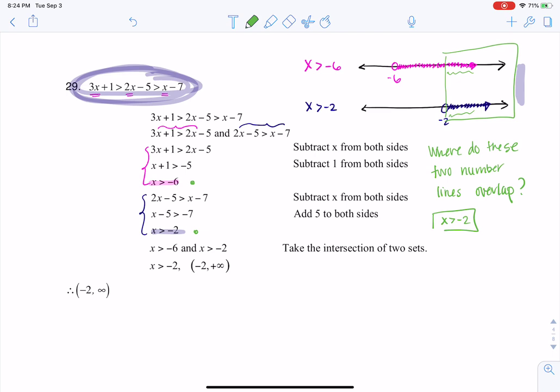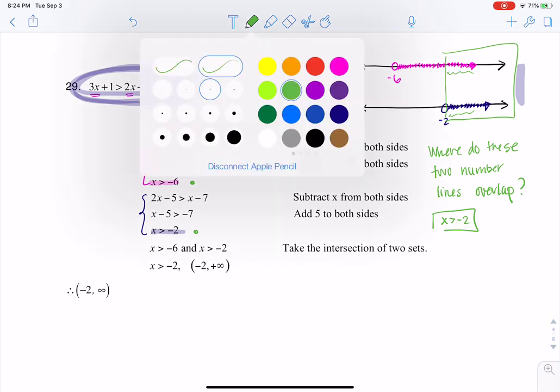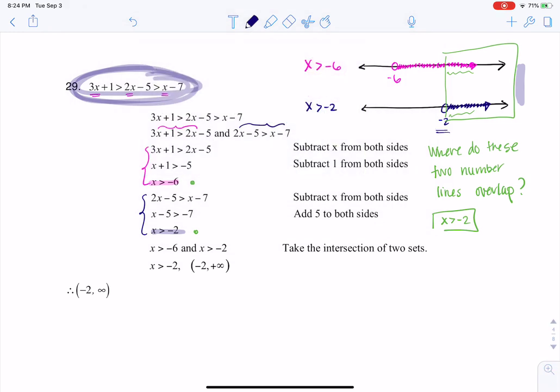And if I say a number is greater than negative two, keep in mind, if we're going to write our interval from low to high, the lowest number is negative two, and the highest number is positive infinity. That's where I'm getting this solution over here. You can also think about it as any number that is greater than negative two is automatically greater than negative six.